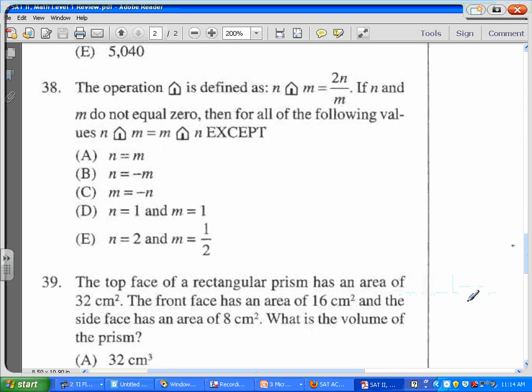Problem number 38 says the operation with this little symbol is defined as n symbol m equals twice n, which is the first number, twice n divided by m. Notice that n will be the first number and m is the second number.